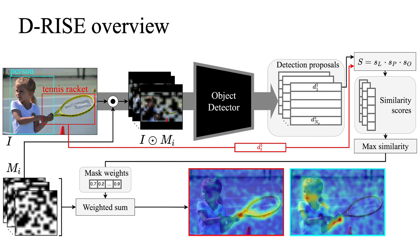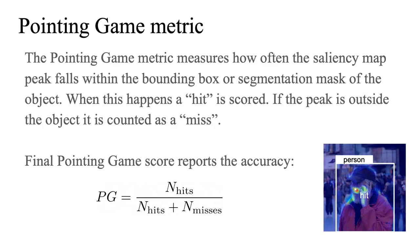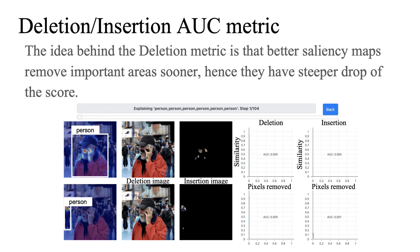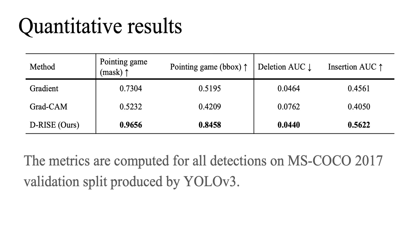D-RISE does not require any knowledge of the internal structure of the model, and it can be applied to any model that produces detection proposals. In our experiments, we show that it works for one-stage detectors such as YOLO, as well as two-stage detectors such as Faster RCNN. To evaluate the results, we use metrics adapted from the classification saliency literature. The point-in-game metric measures how often the saliency peak falls within the bounding box or segmentation mask of the object. Deletion and insertion metrics measure how quickly the model performance changes when modifying the image according to the saliency maps. Our method shows better performance according to these metrics when compared to classification baselines.